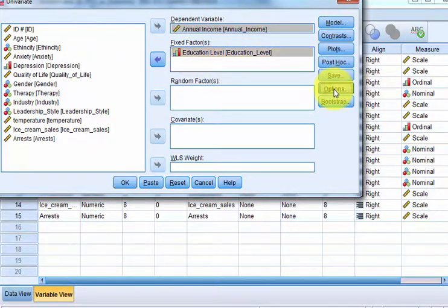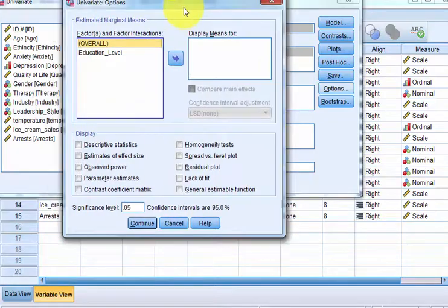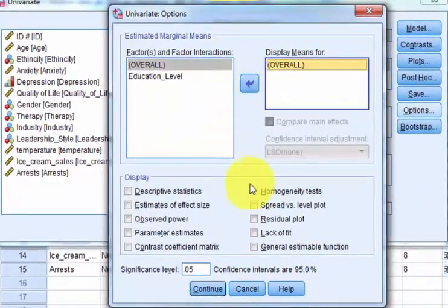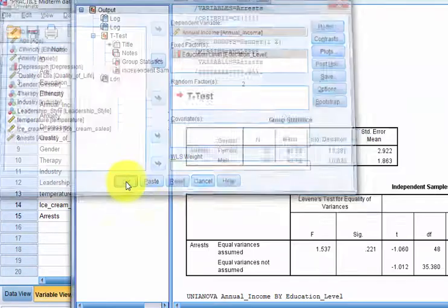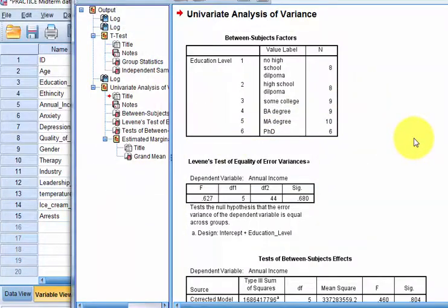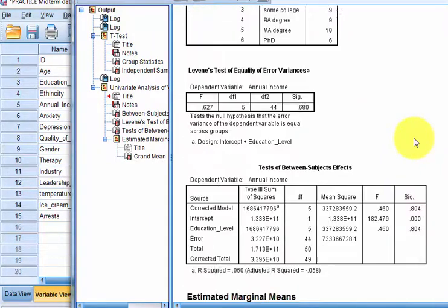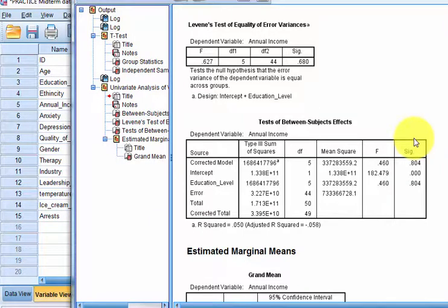I'm just going to do a real quickie here. I just want the homogeneity of variance test. That's the Levine's test. That's what checks for homogeneity of variance. So another way of thinking of homogeneity of variance is the spread of each data set should be relatively the same.